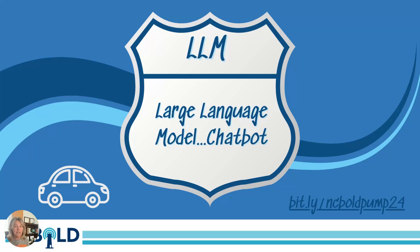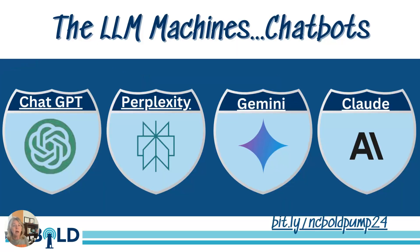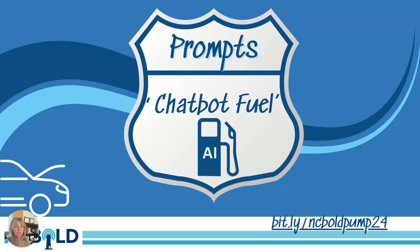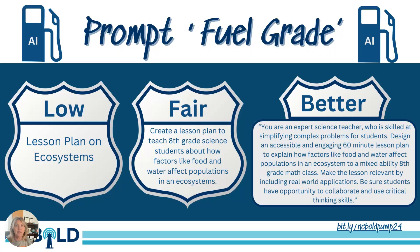We're first going to start by identifying our large language models and which is our favorite one. I've highlighted a couple right here: ChatGPT, Perplexity, Gemini, and Claude. Participants will actually select the one they would like to explore. In this session, we're actually going to be building with these chatbots. When thinking of prompting in consideration of our theme, we are using the AI prompts as our fuel for the chatbots. So let's get started with that.